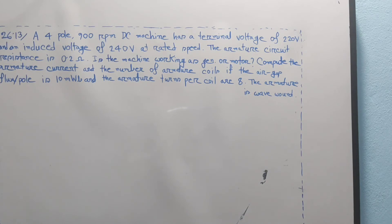The next part is to compute the armature current. We use the DC generator equation relating induced EMF, terminal voltage, armature resistance, and armature current.